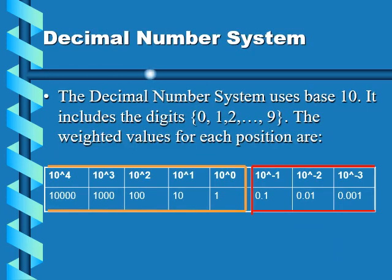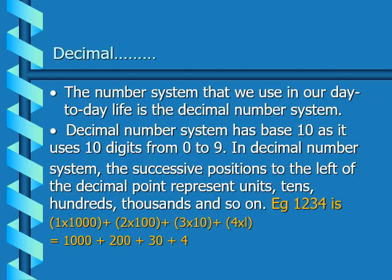In the decimal number system, using the abacus model, we have units, tens, hundreds, thousands, and tens of thousands. The decimal system uses base 10, meaning all digits are weighted at powers of 10. This is the number system we use in daily life — we say give me 10 or 50 oranges, using digits between 0 and 9.